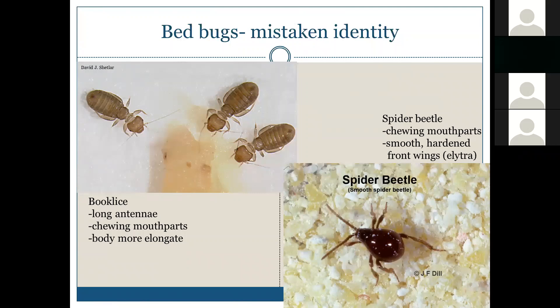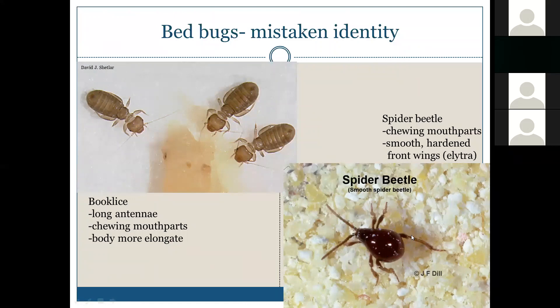Book lice are also confused with bed bugs — these have very long thin antennae, chewing mouthparts, and are generally lighter in color with a more streamlined elongated body shape. Spider beetles are another confused species — they also have chewing mouthparts, a globular body shape, and a smooth hardened front wing (elytra) since they are beetles. Color can vary depending on the species.